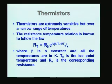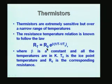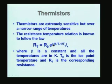Thermistors are extremely sensitive but over a narrow temperature range. The resistance-temperature relation follows: R_T = R0 × exp(β × (1/T − 1/T0)), where temperatures must be in absolute (Kelvin) scale, not Celsius. Beta is called the thermistor constant with units of Kelvin. T0 is the ice point temperature and R0 is the corresponding resistance.